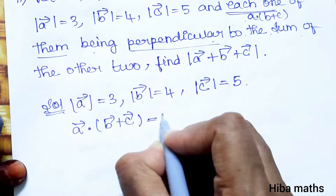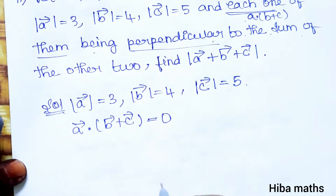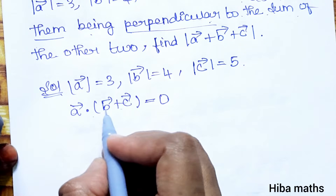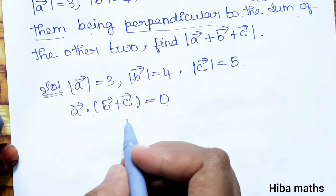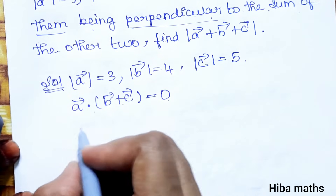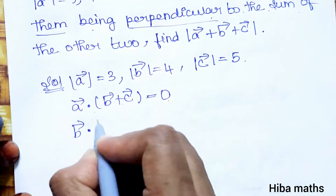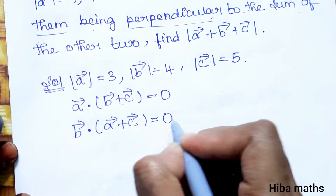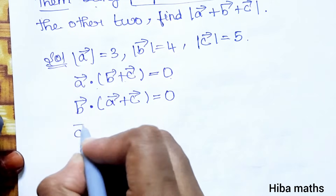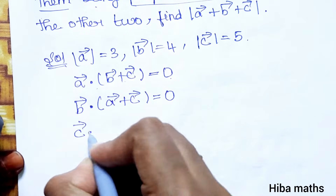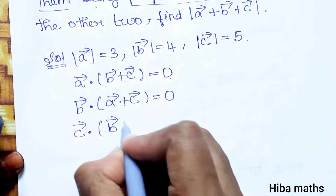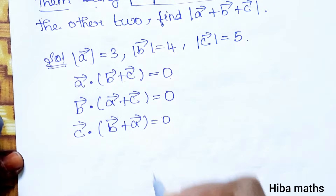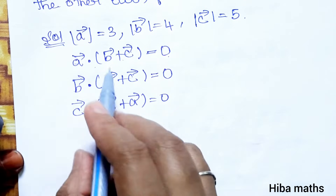From the perpendicularity conditions, the dot product is 0. That means a vector dot (b vector + c vector) = 0, which gives a·b + a·c = 0. Next, c vector dot (b vector + a vector) = 0, giving c·b + c·a = 0.